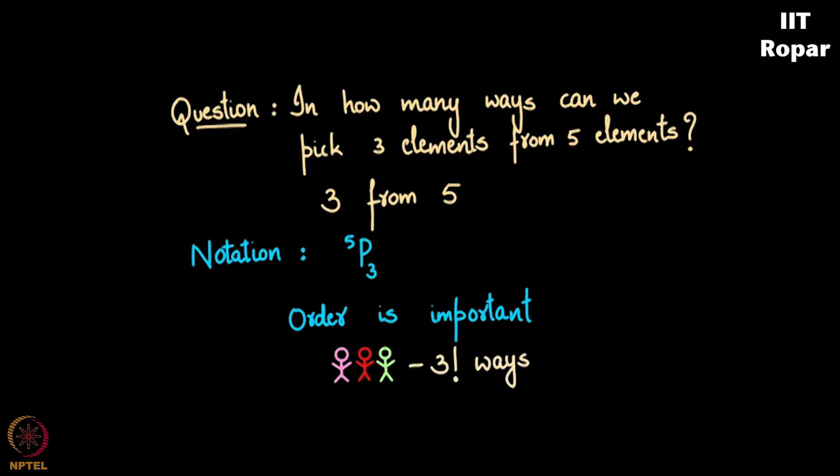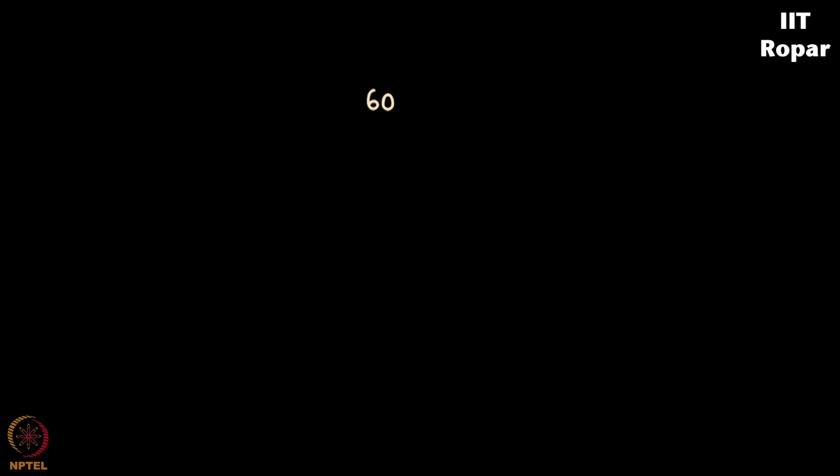There are three factorial ways with three friends, and we enumerated that the sixty ways that we got is basically the representation 5P3.